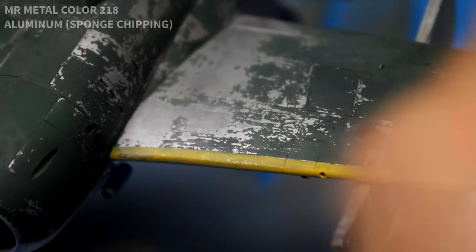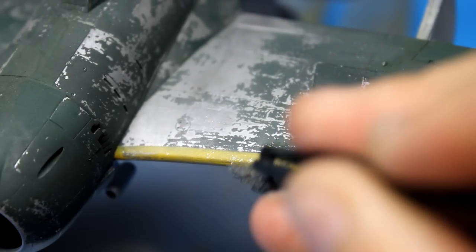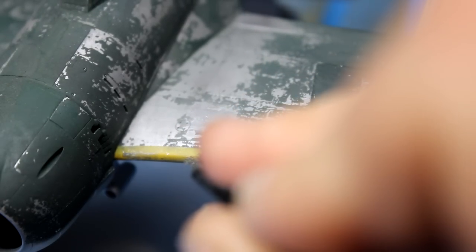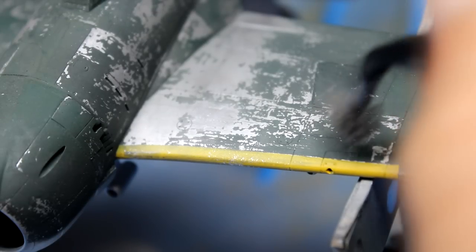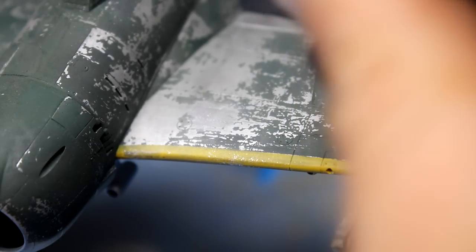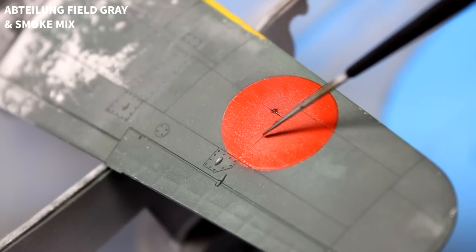For one last layer of chipping, I used the sponge chipping method, and this just leaves some very, very tiny microchips in your paint, and does a great job of tying everything together. Simply dab the sponge in some paint, unload as much as you can until it's almost leaving nothing behind, and then use that for your chipping.